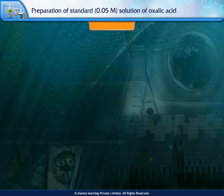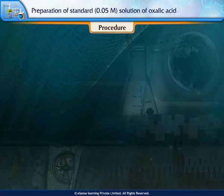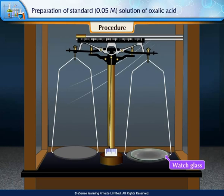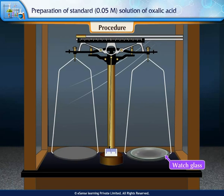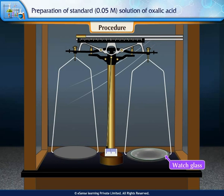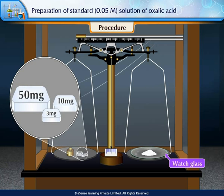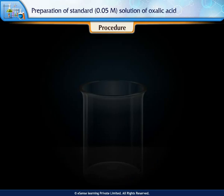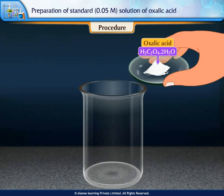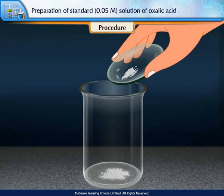To perform the experiment, place a watch glass on a chemical balance and tare its weight. Now weigh exactly 0.63 grams of oxalic acid on the watch glass, then transfer the oxalic acid to a clean beaker.